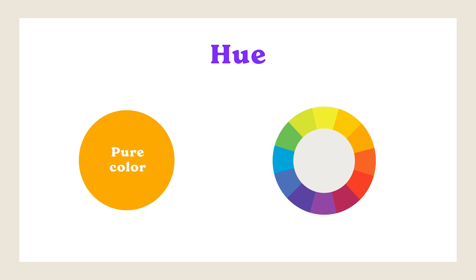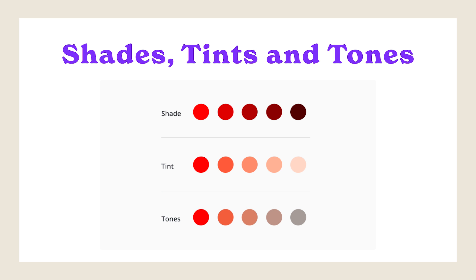Hue represents the specific position of a color on the color wheel — every color can be considered a hue. Now let's move to shades, tints, and tones. These are variations of hues resulting from the addition of white, black, or gray, providing a wider range of colors and versatility. Shades are produced by adding black to a hue, resulting in a darker and more subdued version — the more black added, the deeper the shade. Shades can evoke a sense of mystery, depth, and intensity.